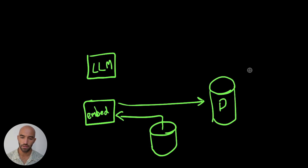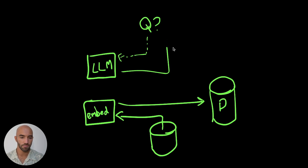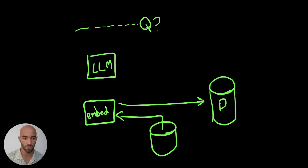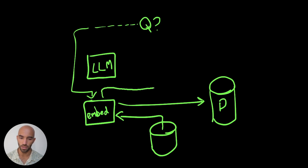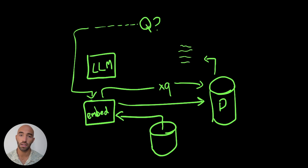When we ask our LLM something — say we have a query and we want to know something about AWS — that query is not going to go directly to our LLM as it usually would. Instead it's actually going to go to our embedding model, and from that we get what we call a query vector, xq. We take that into Pinecone and say: given my query vector, what are the relevant records you have stored — those AWS documents we embedded before — and it gives us a set of relevant responses.